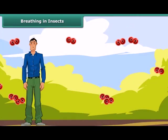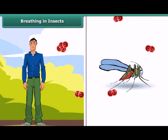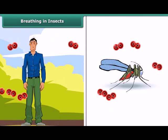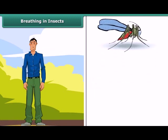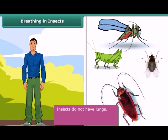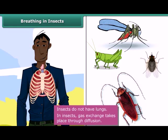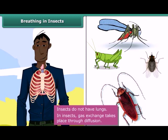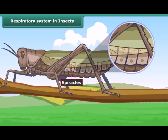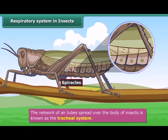Like human beings, insects need oxygen for survival and produce carbon dioxide as a waste product. But unlike human beings, insects like grasshoppers, houseflies, and cockroaches do not have lungs. The process by which gas exchange takes place in insects is known as diffusion. Air enters the insect body through tiny holes present on the sides of the body, known as spiracles.